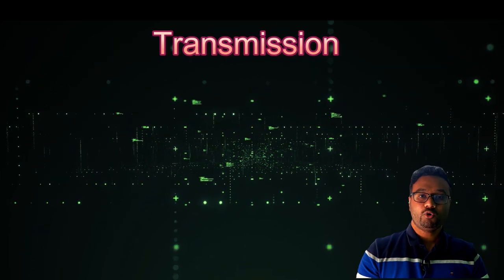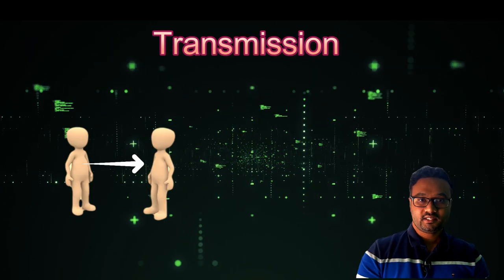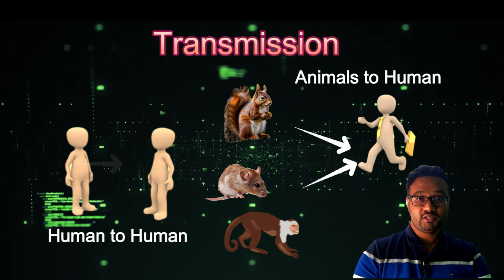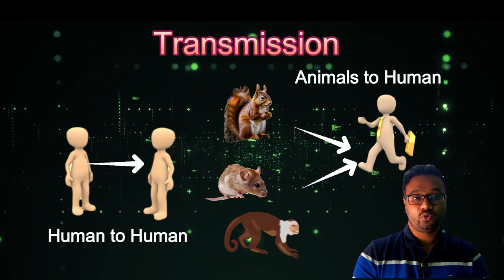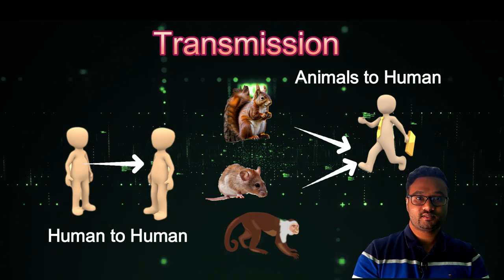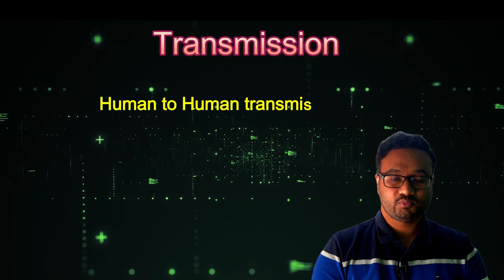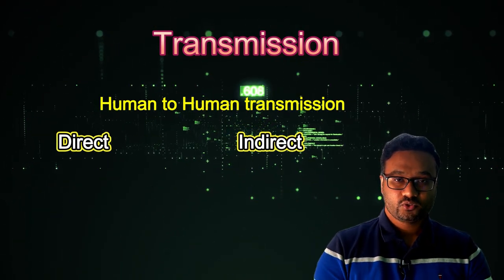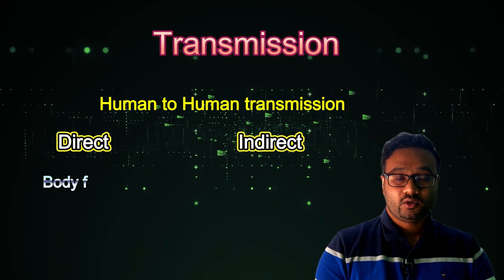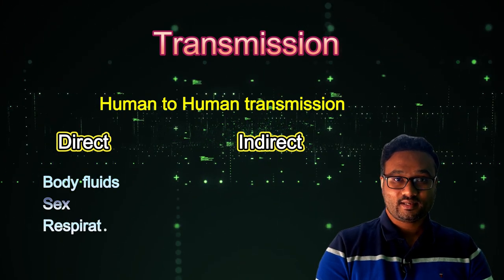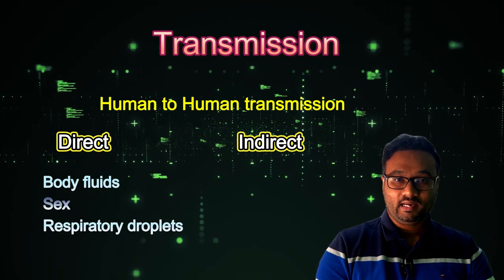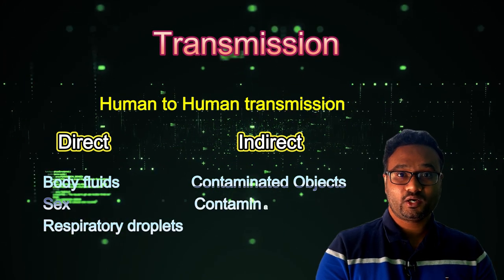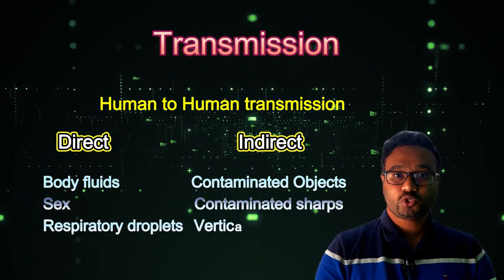Monkeypox can be transmitted from human to human or from animals to humans, with animals including rodents, rats, and squirrels. Human-to-human transmission can be direct or indirect. Direct transmission includes contact with body fluids, sex, and respiratory droplets. Indirect transmission includes contact with contaminated objects, contaminated shops or needles.